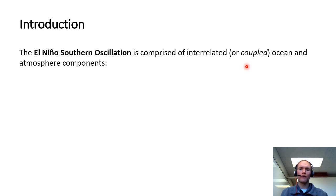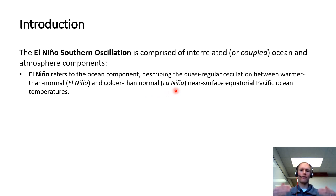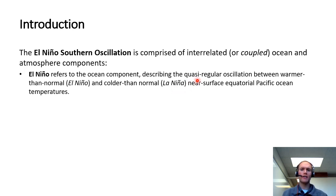What are these ocean and atmosphere components? The one we're probably most familiar with is El Niño, which refers to the ocean component of the system. This describes a quasi-regular oscillation between two phases: a warmer-than-normal phase with warm equatorial central and eastern Pacific ocean temperatures known as El Niño, and one with colder-than-normal near-surface equatorial ocean temperatures known as La Niña. It's not very regular — there's a wide range of time between events, and they don't have the same intensity from one year to the next.